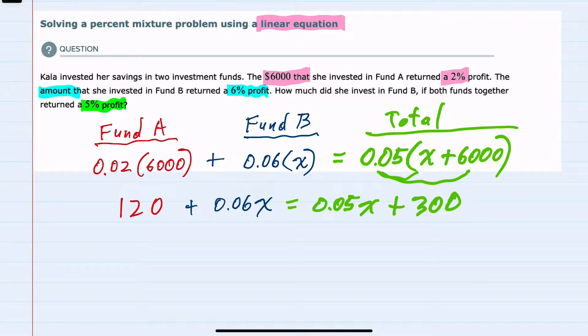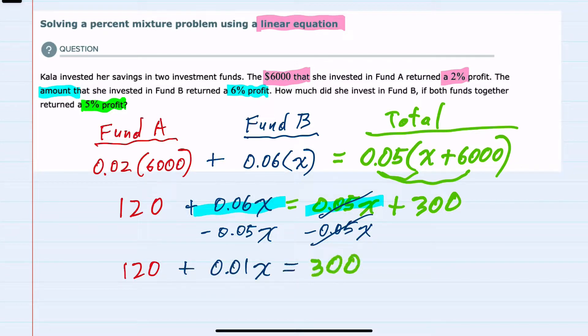And from here, to get the variables on one side, I can see that I have a variable on the left and the right. I'll subtract the variable on the right-hand side over to the left-hand side. That will cancel on the right, and I'm now left with 120 plus 0.01X equals 300.